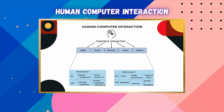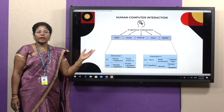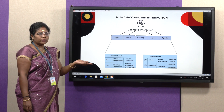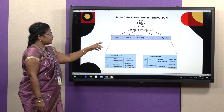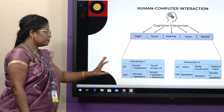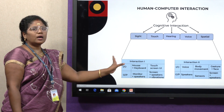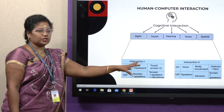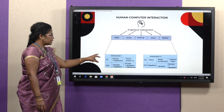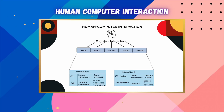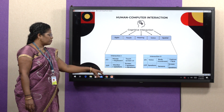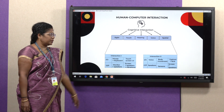Human-computer interaction is related to cognitive psychology. The cognitive interactions are sight, touch, hearing, voice, and spatial. This cognitive interaction is divided into two phases related to input and output processes. In phase one, input interaction is related to mouse, keyboard, and touchscreen UI, while output devices are monitor, speakers, and screen vibrations.